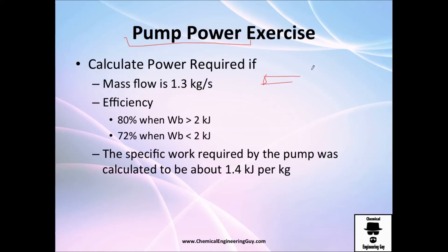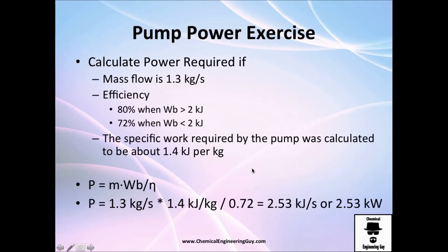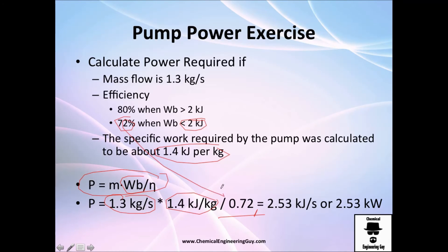Let's do an exercise on pump requirements. We have a pipeline with a pump, a given mass flow, and two efficiency values: we use one efficiency when the requirement is more than 2 kJ/kg, and another when it's less. The head requirement is 1.4 kJ/kg. So: mass flow is 1.3 kg/s, system head is 1.4 kJ/kg, and since the requirement is less than 2 kJ/kg, we use an efficiency of 0.72.